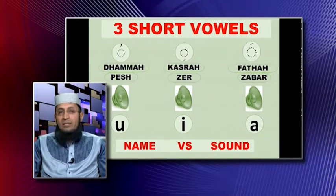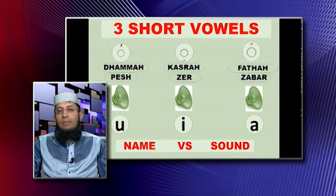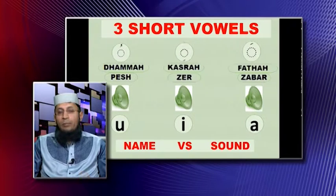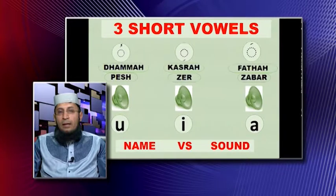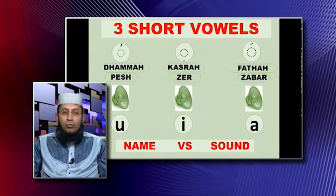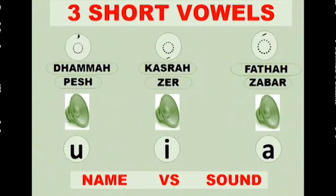When it appears below the letter in the middle, we see Kasra or Zer. And on the extreme left, when it appears in a different shape above the letter, it is called Dhamma or Pesh. Now, the name is Fatha, Kasra, and Dhamma — or Zabr, Zer, Pesh. But the sound each conveys: Fatha conveys an A sound, Kasra an E sound, and Dhamma an U sound.